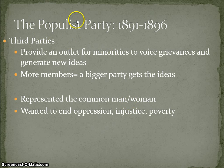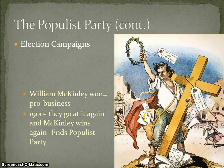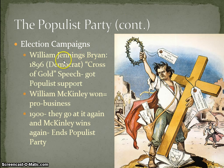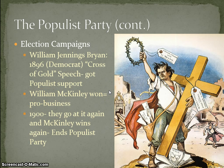Think of the word popular — the Populist Party represented the most common people. In the 1896 election, William Jennings Bryan, a Democrat, gave his famous Cross of Gold speech and got Populist support. Ultimately, McKinley won — he was pro-business and helped the business people. In 1900 they went at it again, McKinley won again, and this marked the end of the Populist Party.